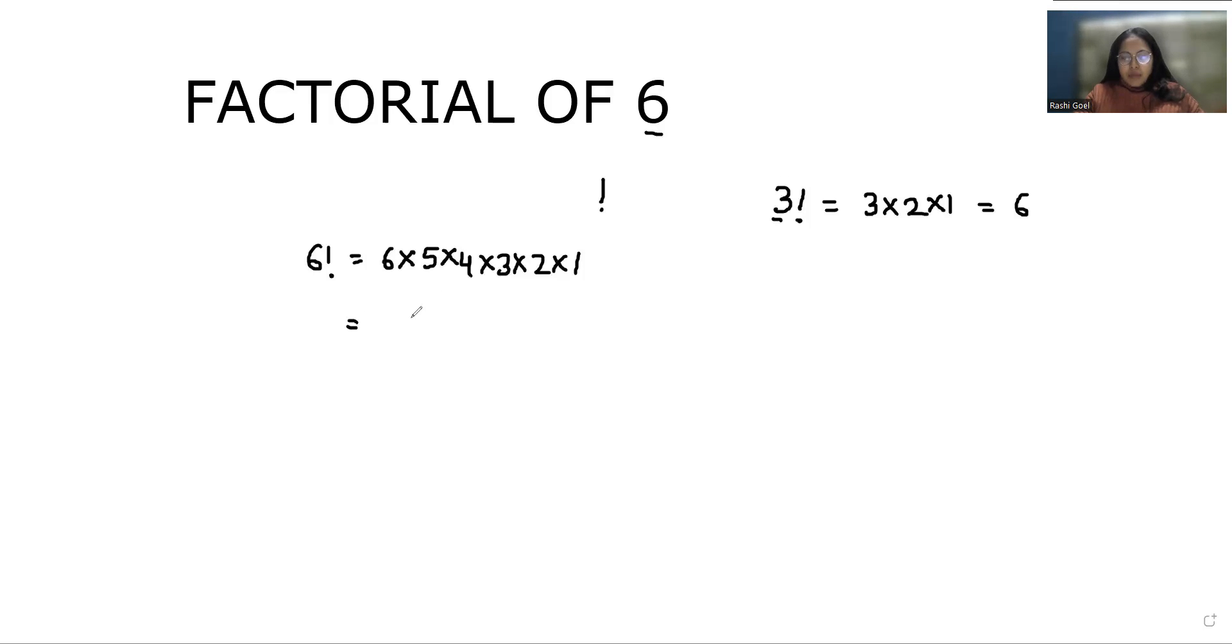6 times 5 is 30, continuing through all the multiplications gives us 720.